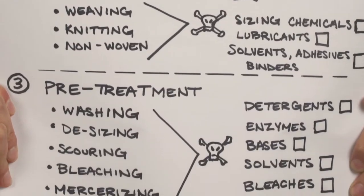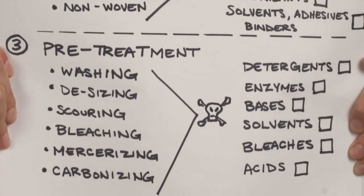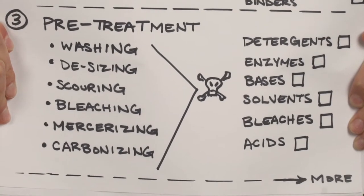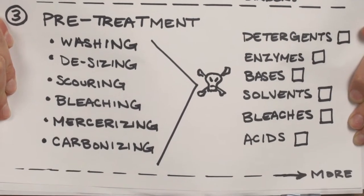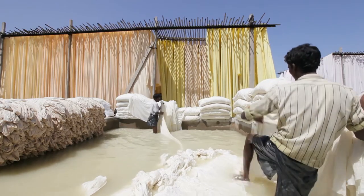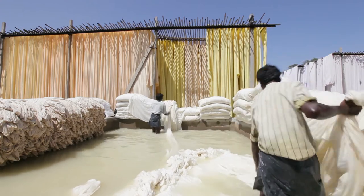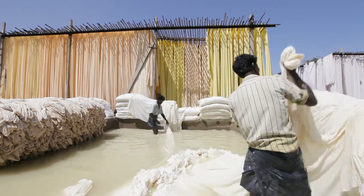Number three: sizing, scouring, bleaching, mercerizing, and carbonizing. This is almost like a pre-treating before you actually get to the dyeing process.